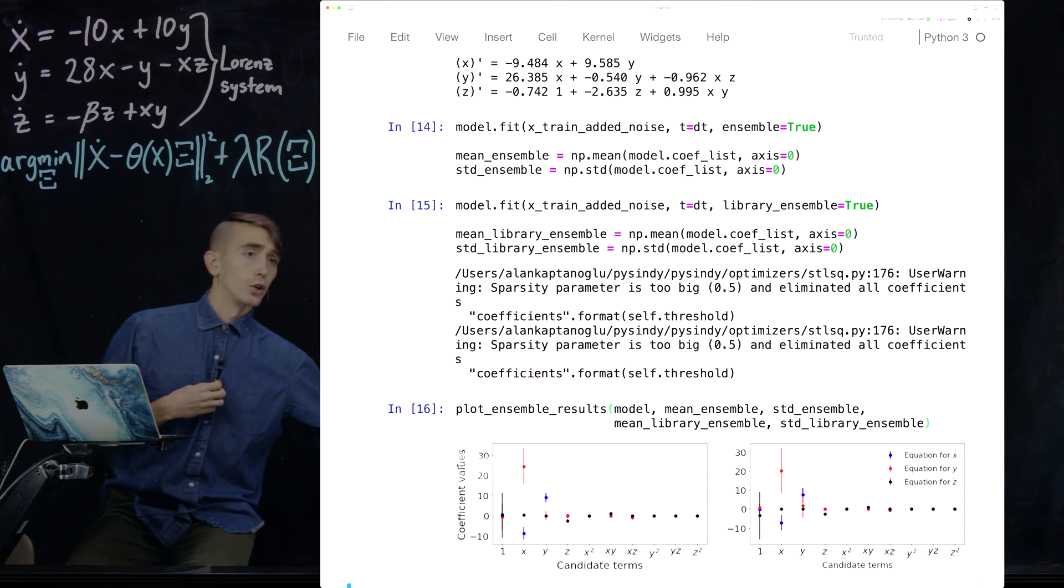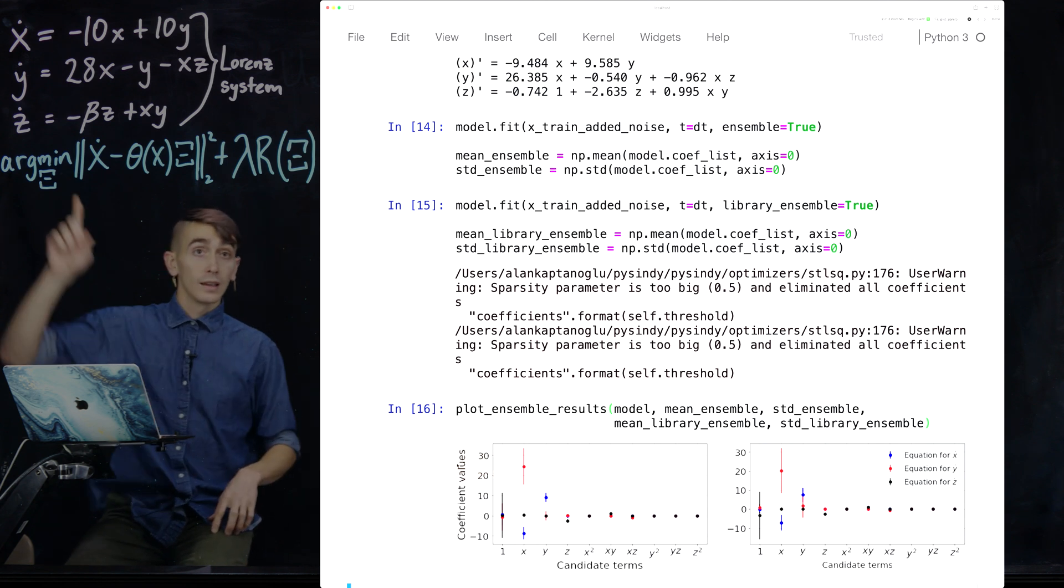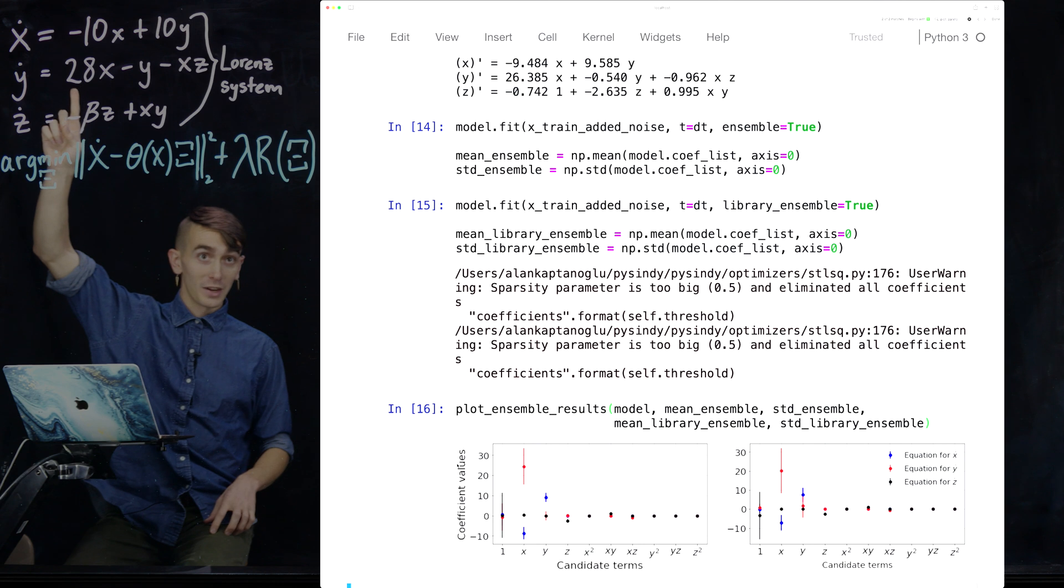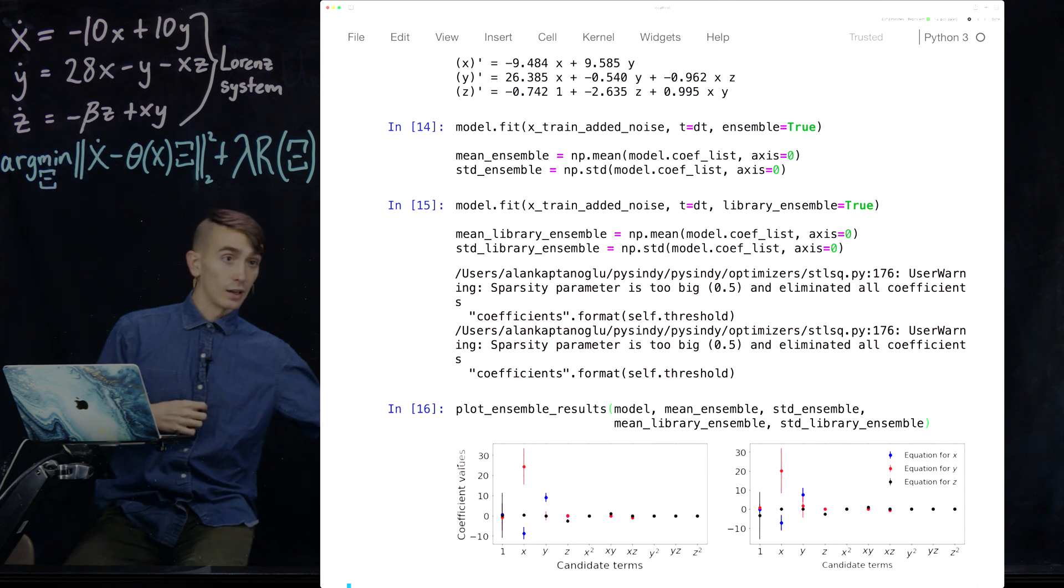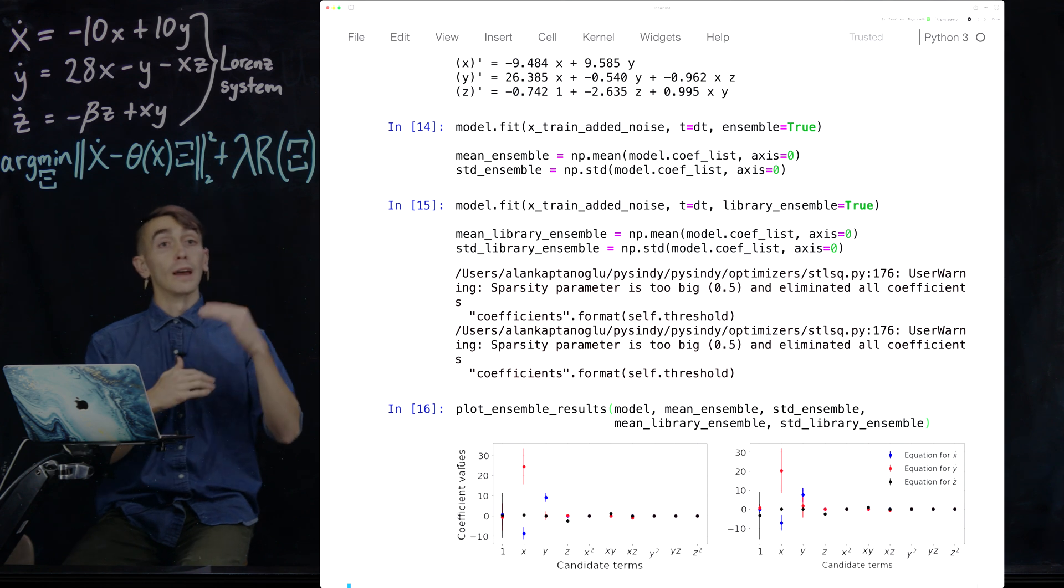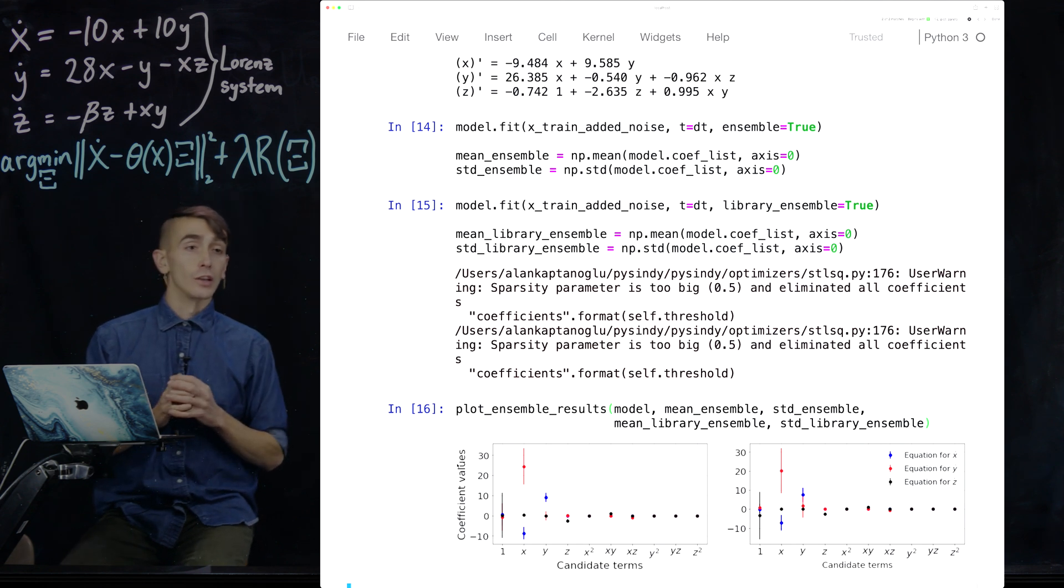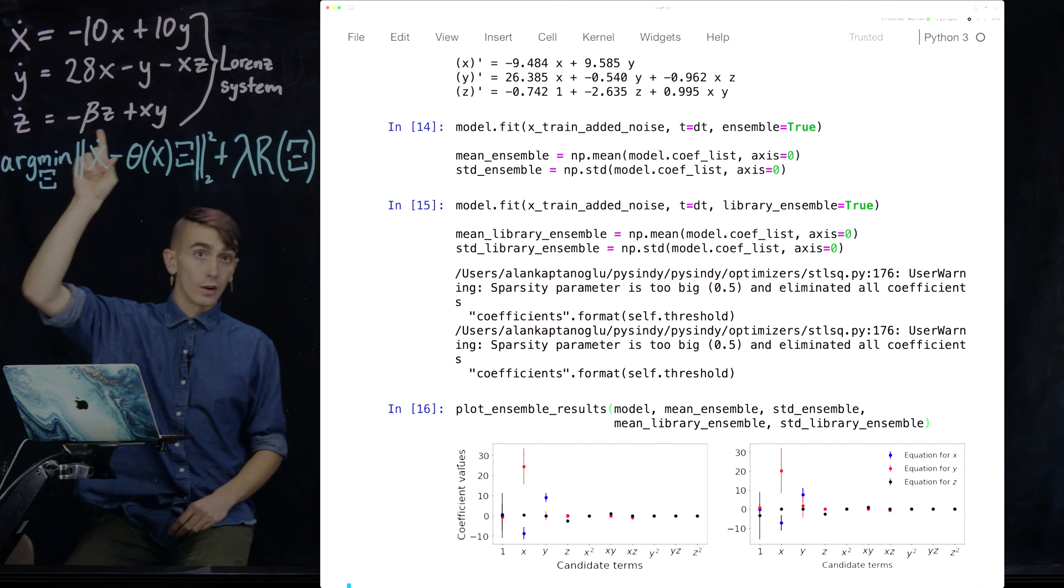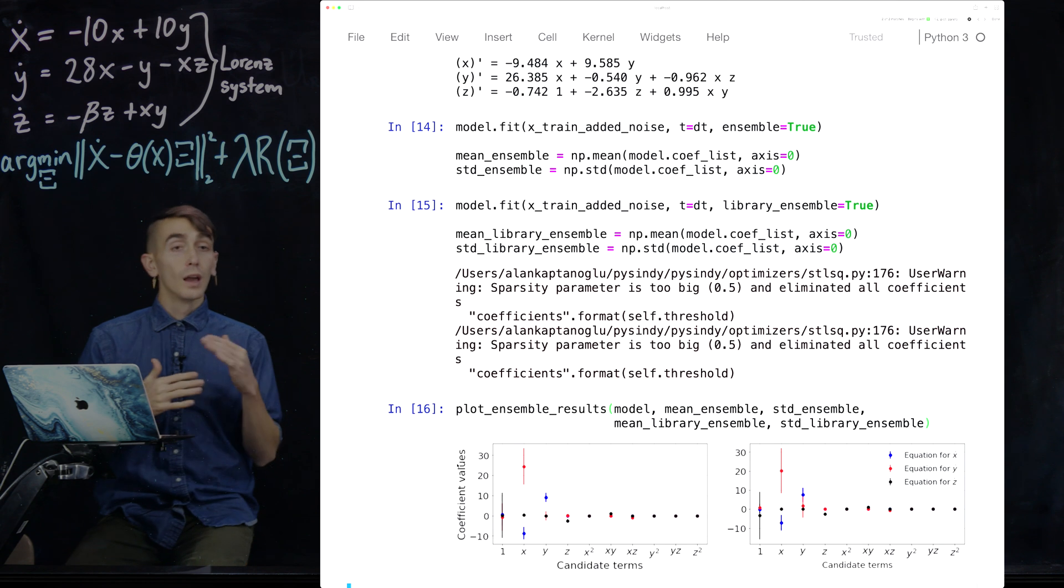So the coefficient on x in the equation for y is 28. And it's about getting 28, at least within the error bounds on these error bar plots. And this is the same for all the other coefficients. All the coefficients in this model are identified within the error bars of these models.